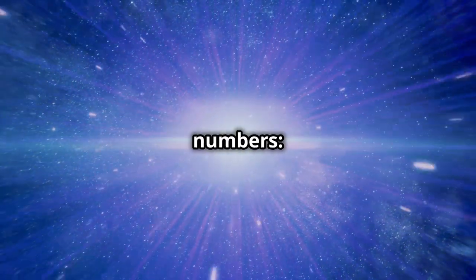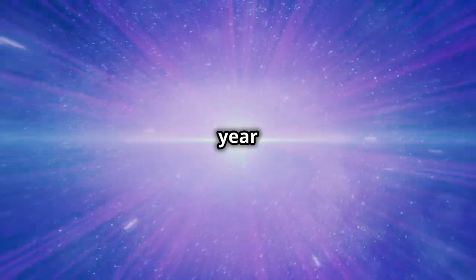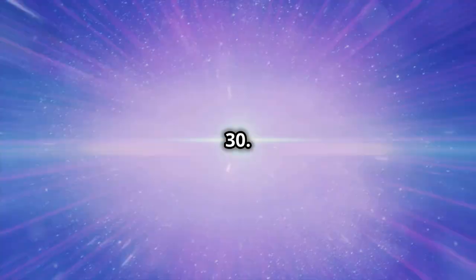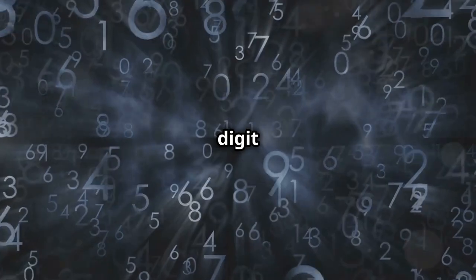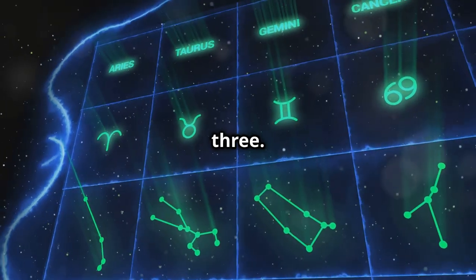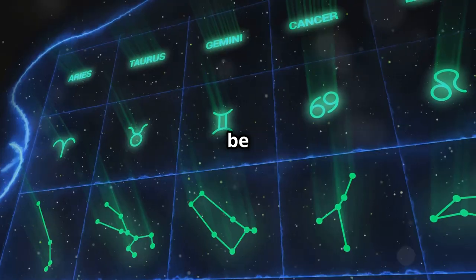Finally, we add up all these numbers. 4 (April) plus 7 (day) plus 19 (year) equals 30. Reduce this to a single digit by adding 3 plus 0, which gives us 3. So your karmic number would be 3.